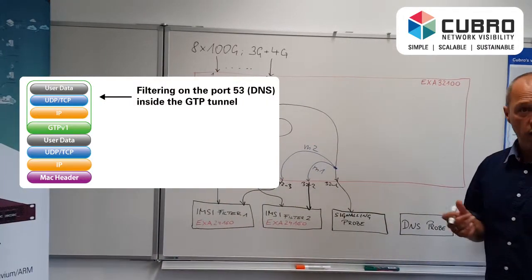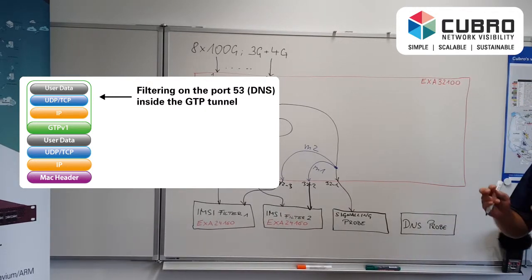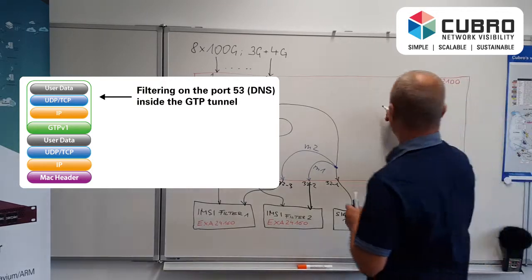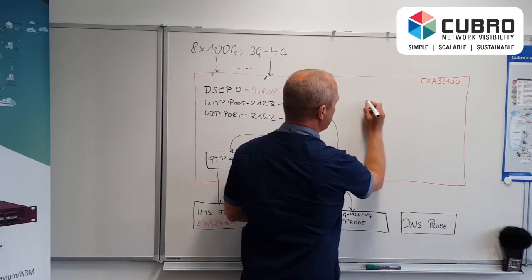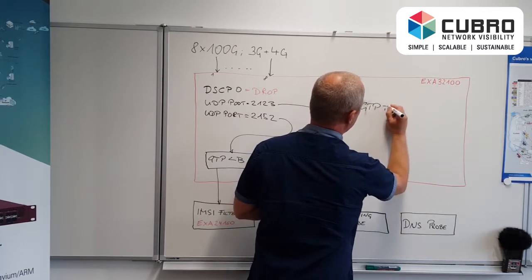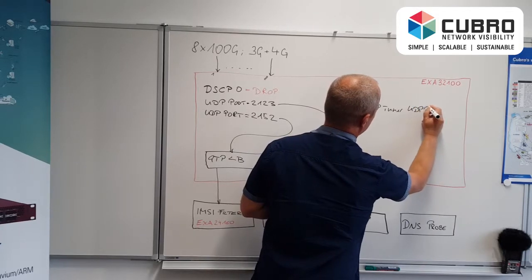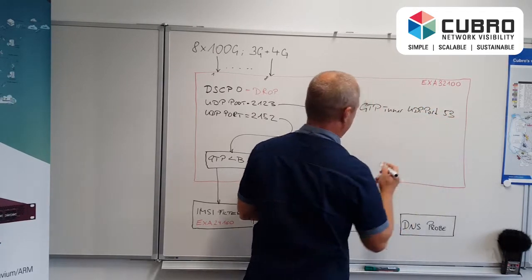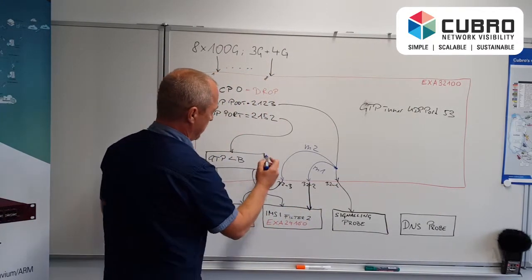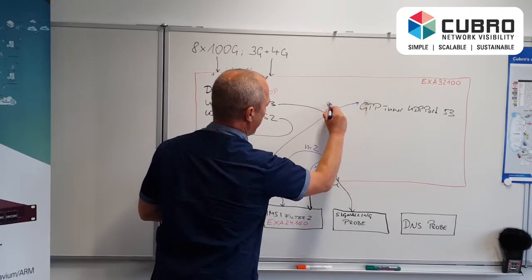DNS is port 53. That's a good and easy filter. But remember port 53 is the inner port. Okay, so we develop another filter that's called GTP inner UDP port 53. So that's my filter. And what I do is I take another mirror, take the mirror here to this filter. That's my M3.